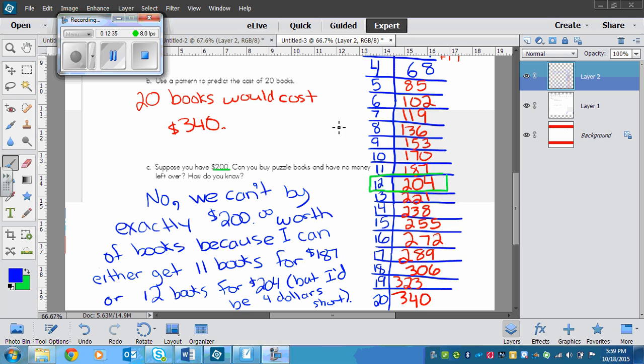So no, we can't buy exactly $200 worth of books because I can either get 11 books for $187 or 12 books for $204. But I'd be $4 short, right? So I couldn't get 12. The most I could get is 11, and then I would still have some money left over. I'd have $13.